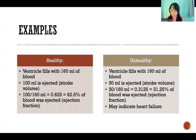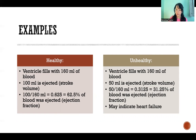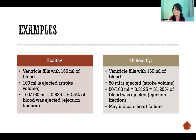In the unhealthy example, the ventricle is filled with the same amount of blood — 160 milliliters — but in this case only 50 milliliters are ejected. That's the stroke volume, which would still be considered healthy since 50 to 100 milliliters is the healthy range. But if we divide 50 by 160, we get 31.25%, which is the ejection fraction, and that is considered unhealthy and could be an indication of heart failure.